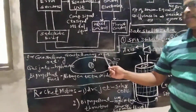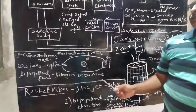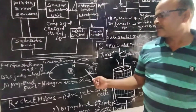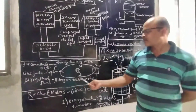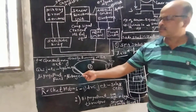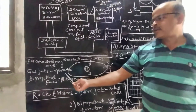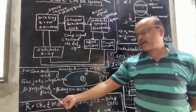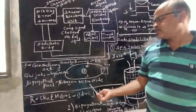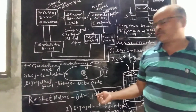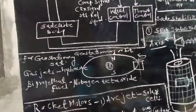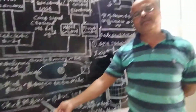For geostationary satellites, if we have to provide stabilization, generally gas jets are used. This is the satellite, this is the earth, and this is the orbital path of that satellite. In these gas jets, hydrogen is used and also bi-propellent fuels such as nitrogen tetra oxide and hydrogen are also used. To provide this stabilization, rocket motors are also used.